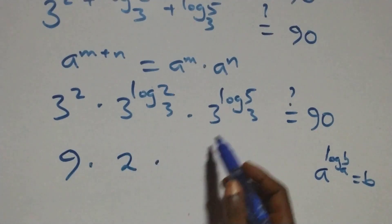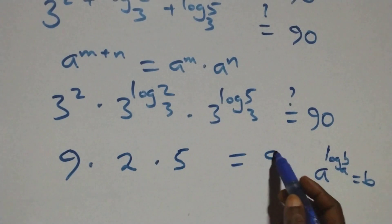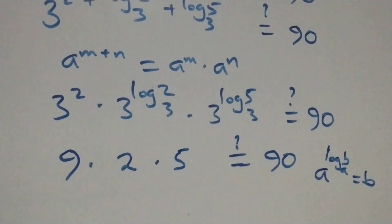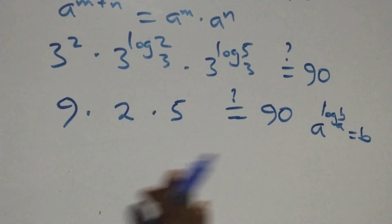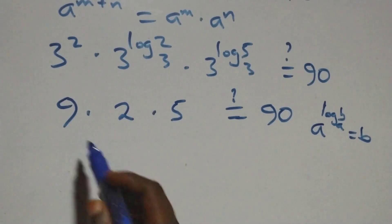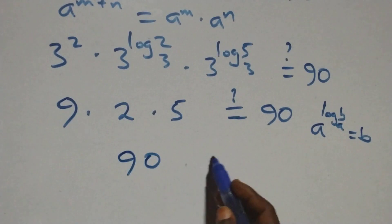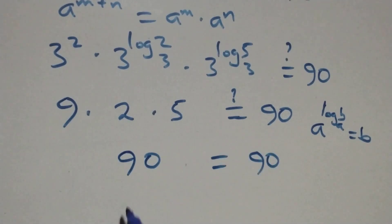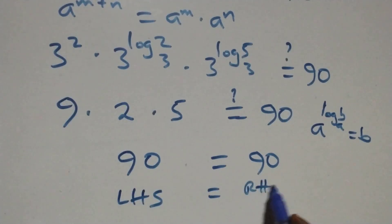This gives us 3 squared times 3 to the log 2 base 3 times 3 to the log 5 base 3, all over 2 having been applied, equals 90. Then 2 times 5 equals 10, and 10 times 9 equals 90, so we have 90 equals 90. The left-hand side equals the right-hand side.